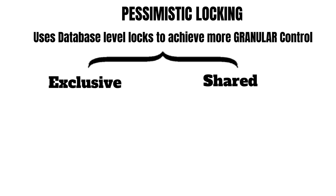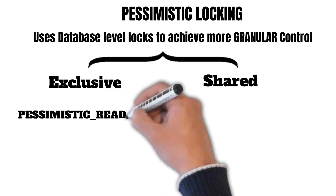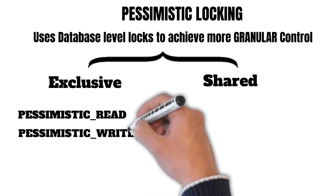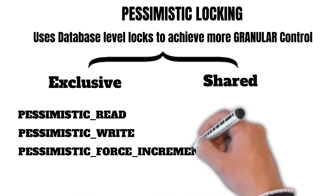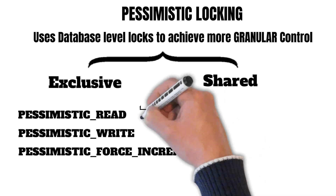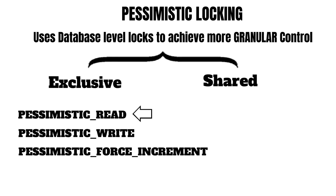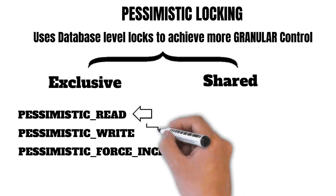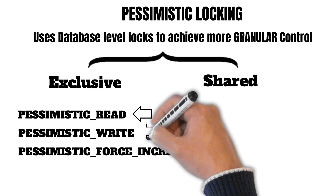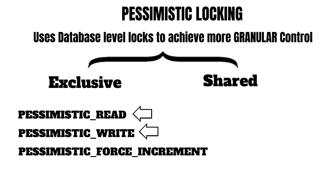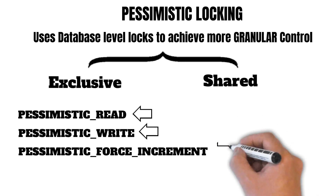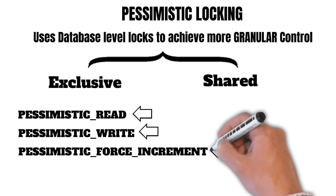To support this behavior, Hibernate provides three kinds of pessimistic locking modes: PESSIMISTIC_READ, PESSIMISTIC_WRITE, and PESSIMISTIC_FORCE_INCREMENT. When we wish to read data, we should acquire PESSIMISTIC_READ, which allows other connections to read the data as well. When we want to update, write, or delete data, we should use PESSIMISTIC_WRITE, which prevents other connections from reading the data while we are writing or deleting. PESSIMISTIC_FORCE_INCREMENT behaves like PESSIMISTIC_WRITE but also updates the version property whenever we read the data.